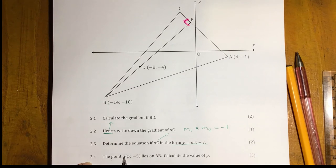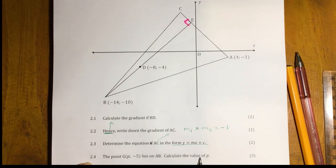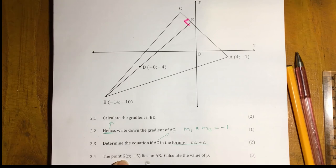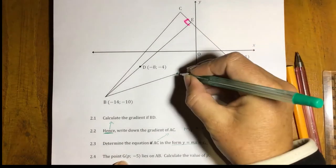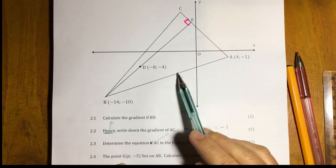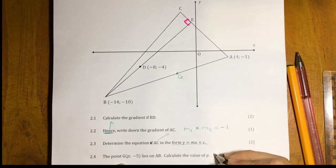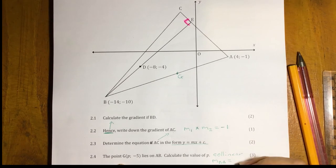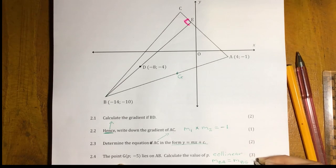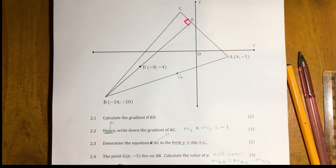2.4. The point G lies on the line AB. Calculate the value of P. Now, they don't tell us anything else about where P is on that line. So I can put a dot there and put a G. So we know then these three points are collinear. And so I'm going to use the concept of collinear to work out the P value in point G. And what do we know about points that are collinear? Yes, their shared gradients are the same. So the gradient of BA will be equal to the gradient of BG, which is equal to the gradient of AG. And notice each time we are sharing a point between these three gradients.